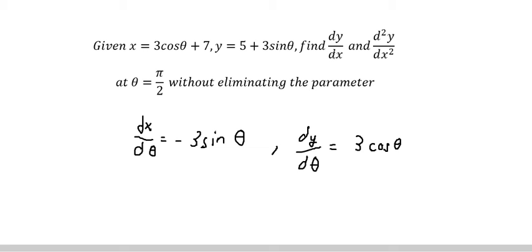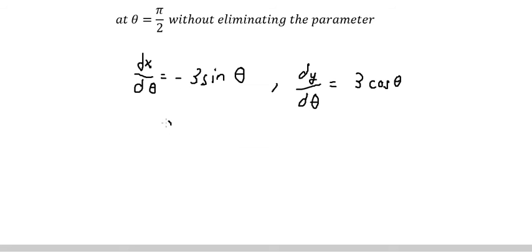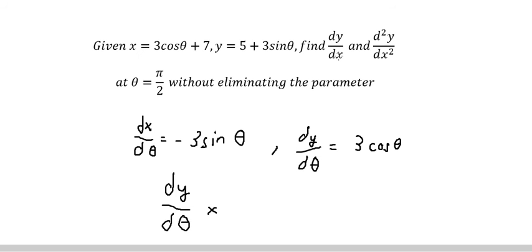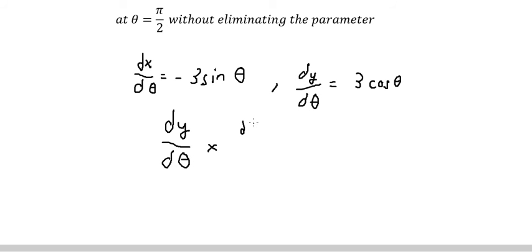Now we have dy over dx. We can change into dy over d theta multiply with d theta over dx. So because this one, we cancel with this one, and this one we can put about a new one.